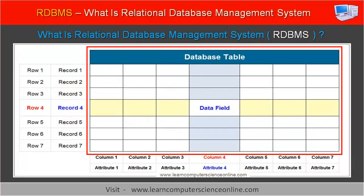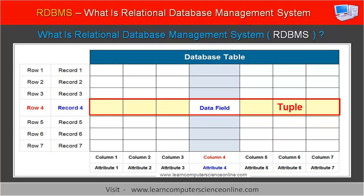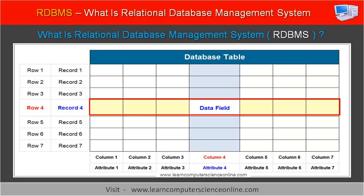Each table can have multiple rows and columns. A table is a collection of records and represents a database entity. Each row in the table represents a record. A table row is also alternately referred to as a tuple. The intersection of a row and column is referred to as a data field. Each data field can be uniquely identified with reference to the respective row and column. Each row in the table consists of a number of data fields.